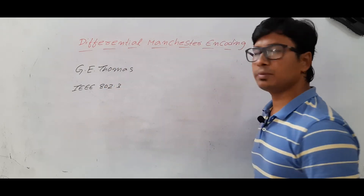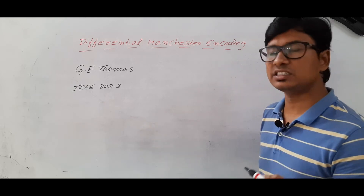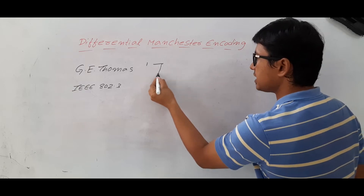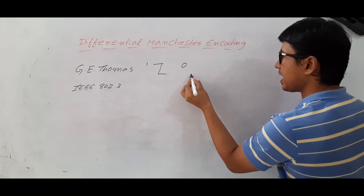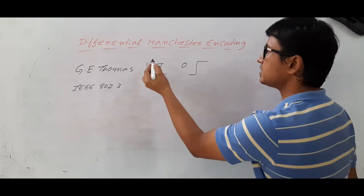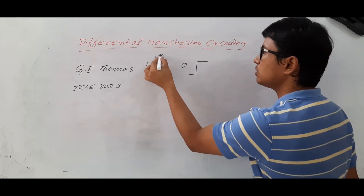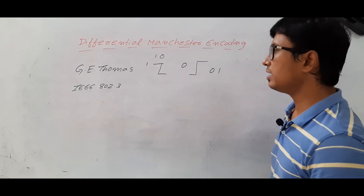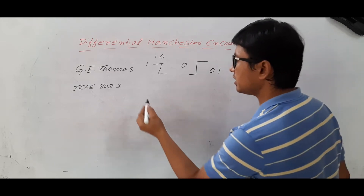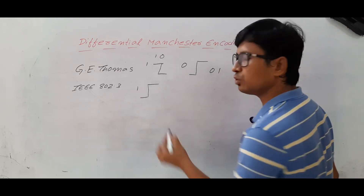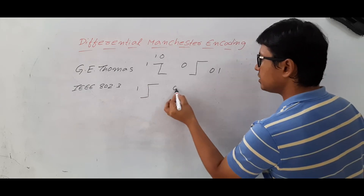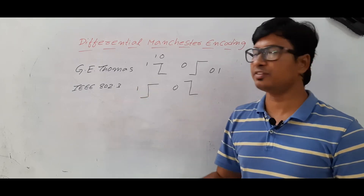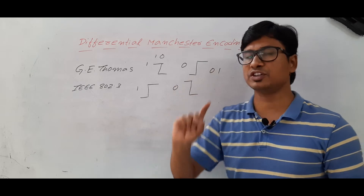Please remember one thing. When it comes to Manchester encoding, in J.E. Thomas, one is represented as two-bit interval one-zero, and zero is represented as two-bit interval zero-one. In IEEE 802.3, one is represented as low to high and zero is represented as high to low. The same rules are applied for differential Manchester encoding for the first bit.